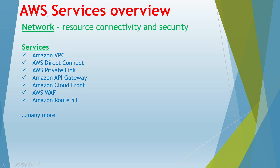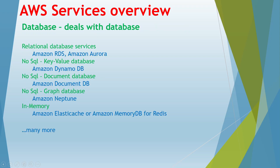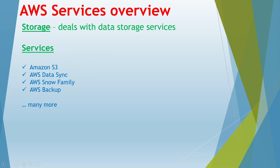Next let's go to databases. This module deals with different kinds of databases — relational databases, in-memory databases, NoSQL, key-value, document, and graph databases. Amazon RDS and Amazon Aurora are provided for relational database services supporting engines like Oracle and MySQL. For in-memory databases, AWS provides ElastiCache and Amazon MemoryDB for Redis. Many more databases are also available in the AWS database module.